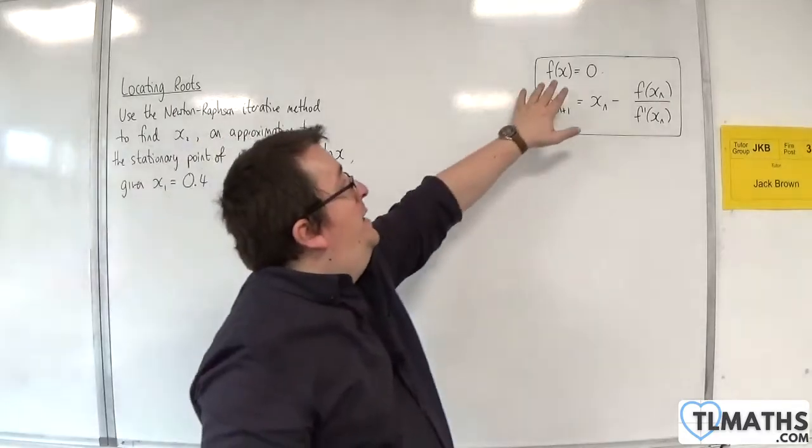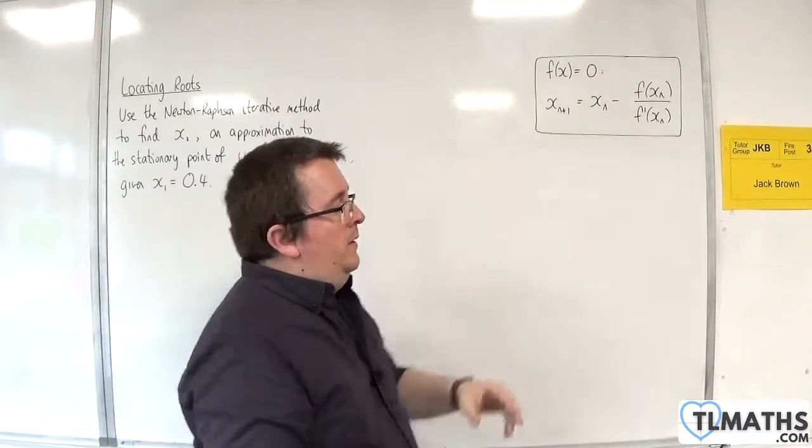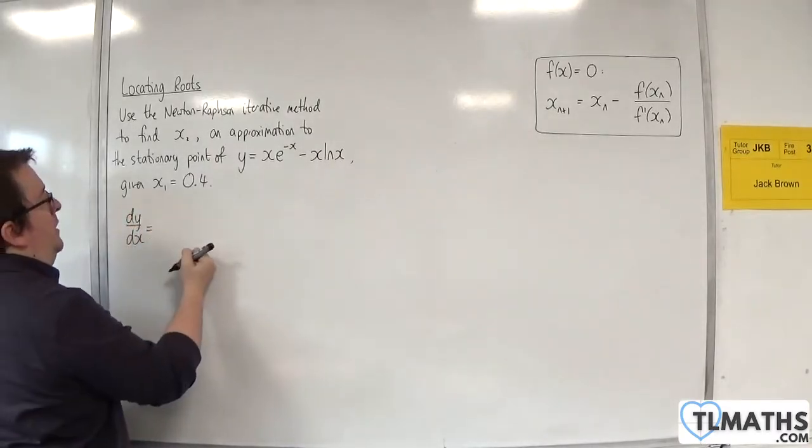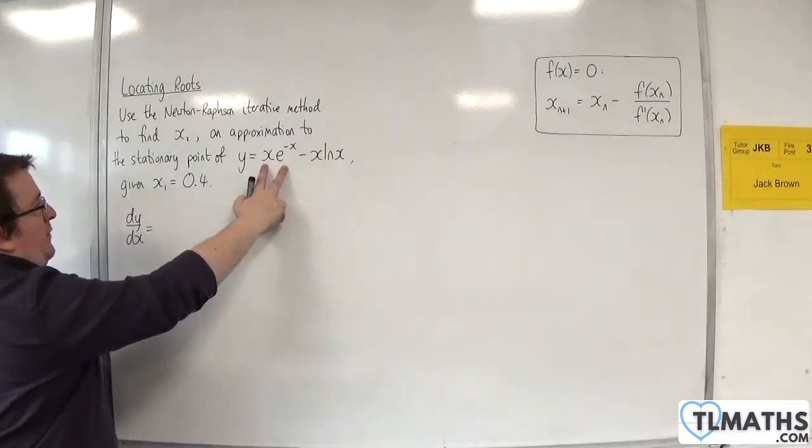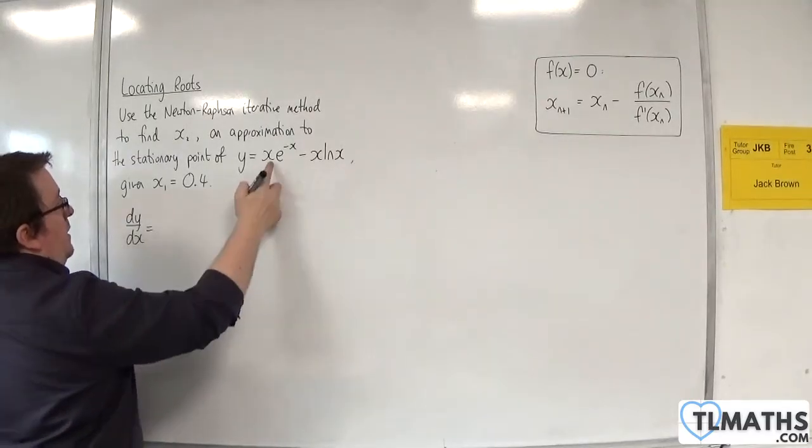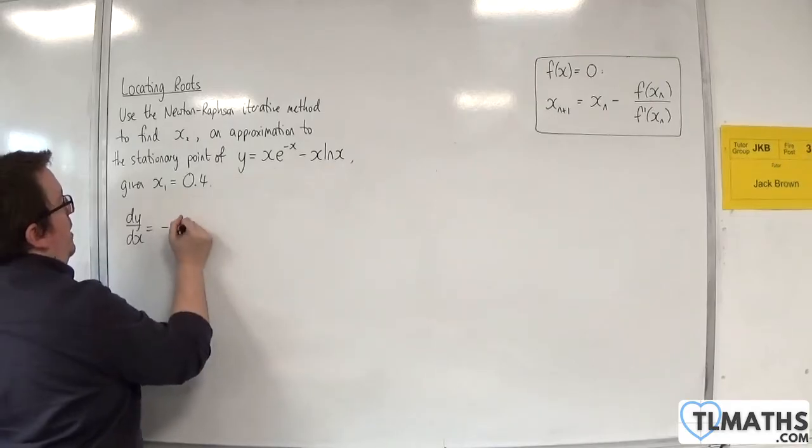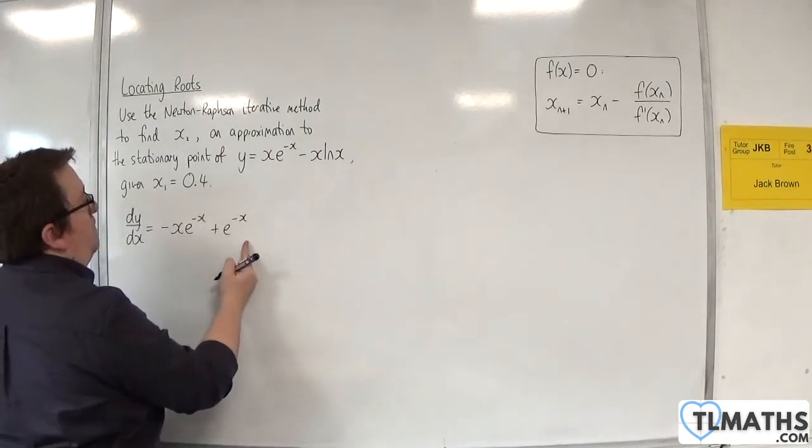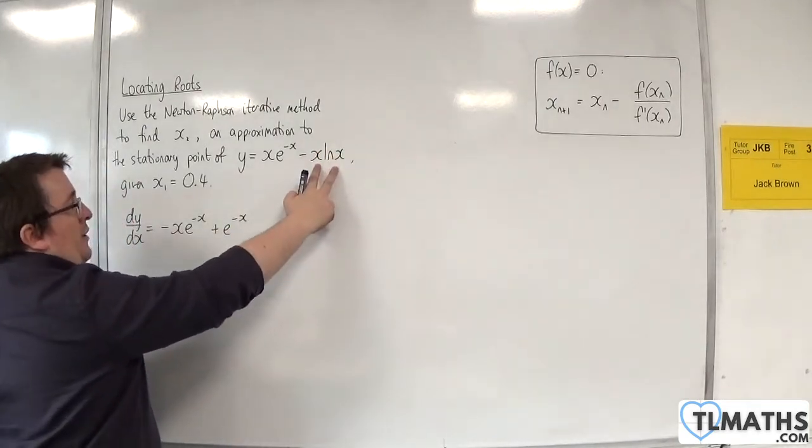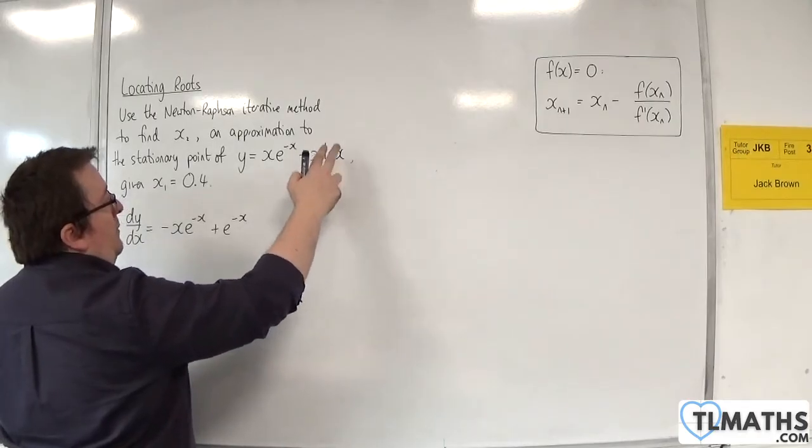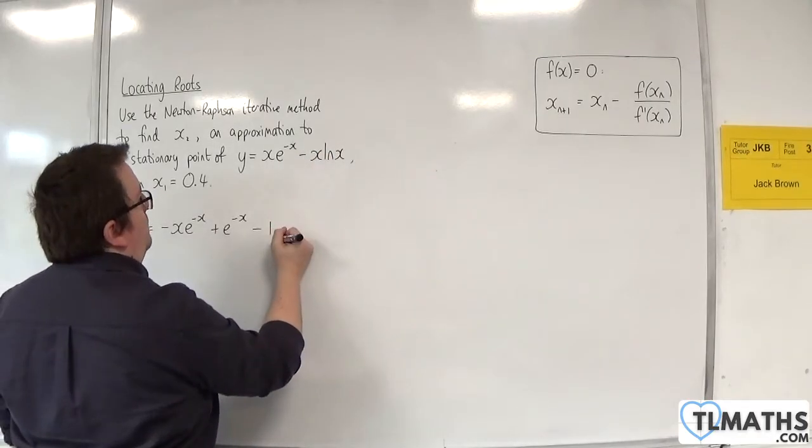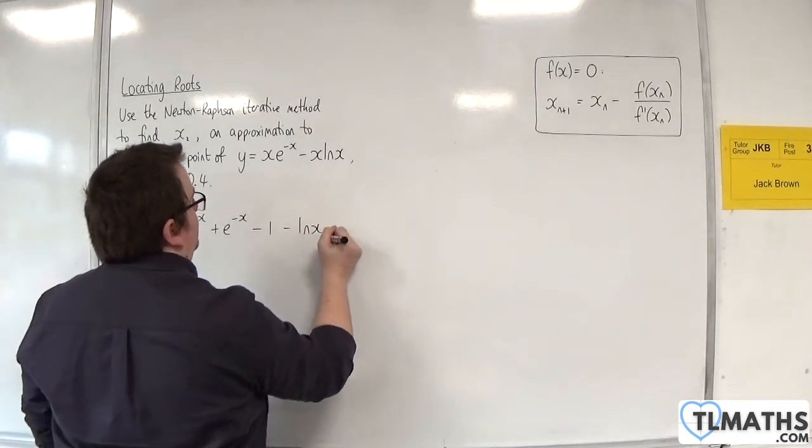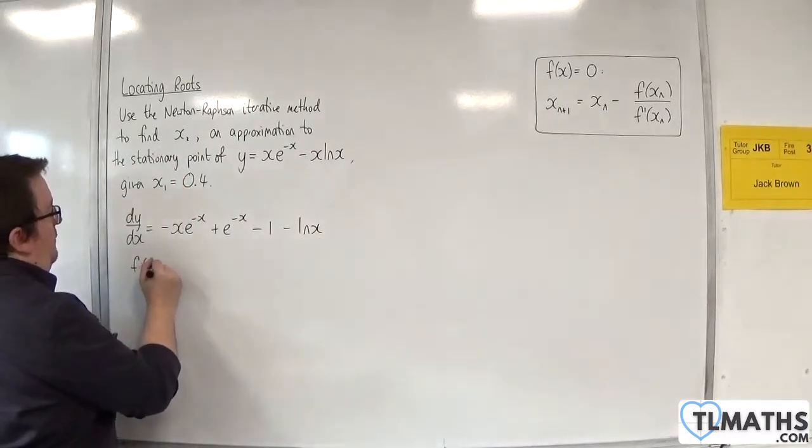So I need to find dy by dx. That's going to be my f of x. So the first thing I need to do is find dy by dx. I'm going to need to differentiate xe to the minus x using the product rule, which is the first times the derivative of the second. So minus xe to the minus x plus the second times the derivative of the first, so plus e to the minus x. Then I need to differentiate this using the product rule. So minus x times the derivative of log x is 1 over x, so that would be minus 1. Then log x times the derivative of minus x is minus log x. So this is f of x.